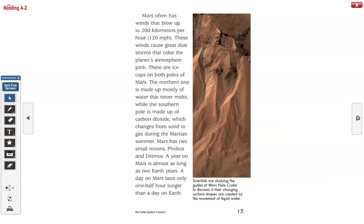Mars has two small moons, Phobos and Deimos. A year on Mars is almost as long as two Earth years. A day on Mars lasts only one half hour longer than a day on Earth. Scientists are studying the gullies at Mars Hale Crater to discover if their changing surface shapes are created by the movement of liquid water.